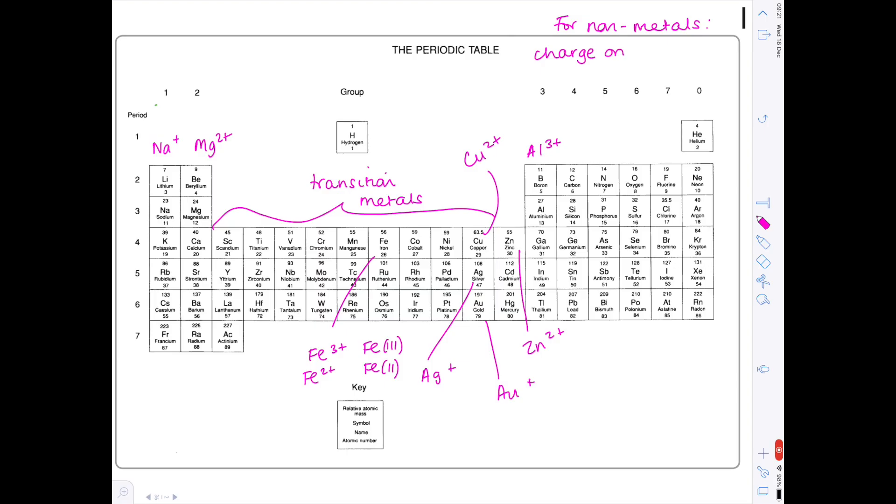So for non-metals, the charge on the ion is 8 minus the group number. So for nitrogen, that's in group 5. So 8 minus 5 is 3. So its charge on its ion will be N3-. Be very careful. It's minus when it comes to looking at the ion charges for non-metals. Oxygen is going to be 8 minus 6, so that's O2-. Fluorine, 8 minus 1, so that's F-. Remember that the group 0 elements are monatomic, so they exist as single atoms. Why? Because they are very unreactive. Why? Because they have a full outer shell.